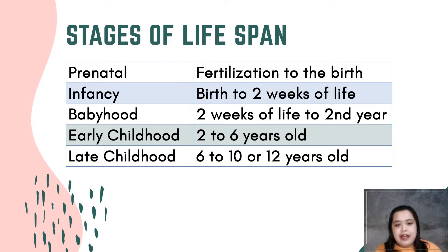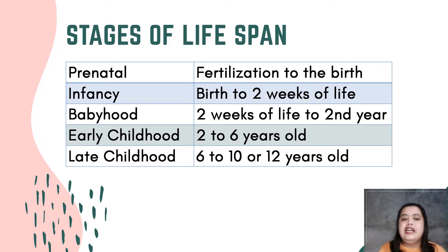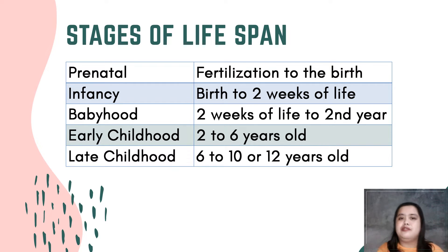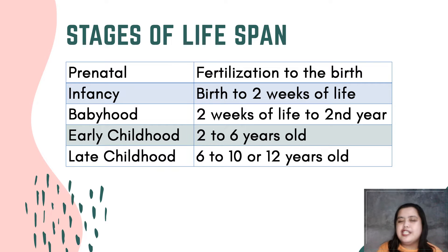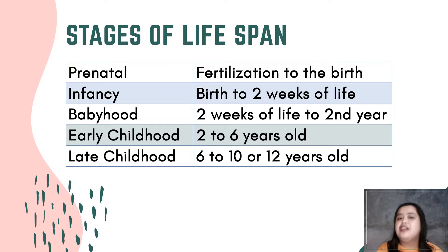Next we have early childhood, which is two to six years old, and late childhood, which is six to ten or twelve years old. So those are the first five stages of lifespan according to Elizabeth Hurlock.